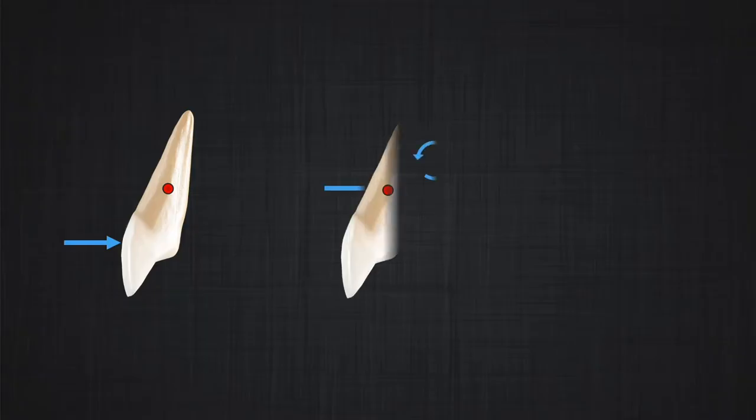Let's do an experiment. Let's bring the force a little bit lower, at the level of the CEJ of the tooth. What will happen? To understand what will happen, we need to again draw the equivalent system. If we draw the equivalent system, we didn't change the magnitude of the force, so the force should be the same. But what do you think happened to the moment? The distance between the force and center of resistance is smaller, therefore the moment should be smaller.